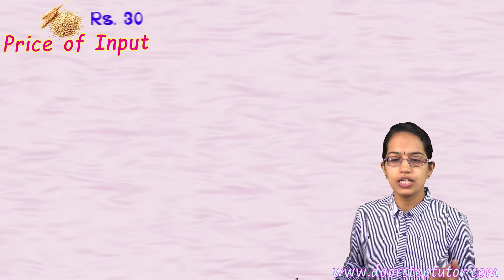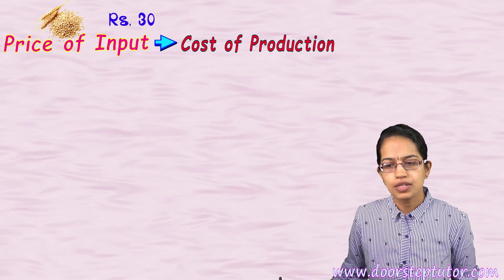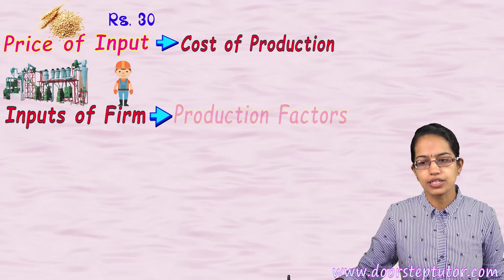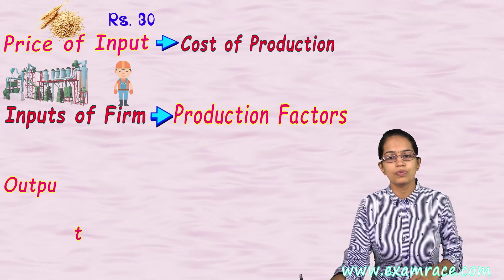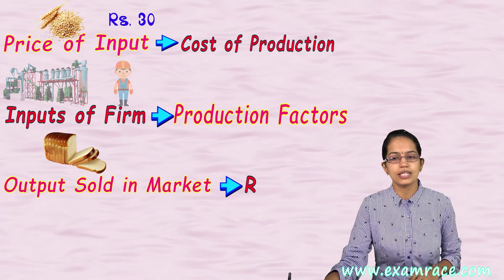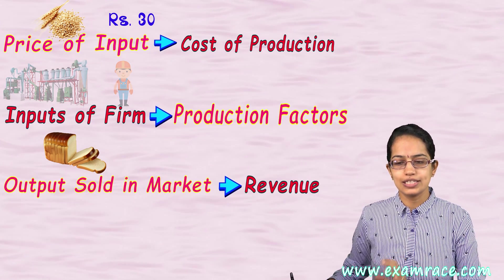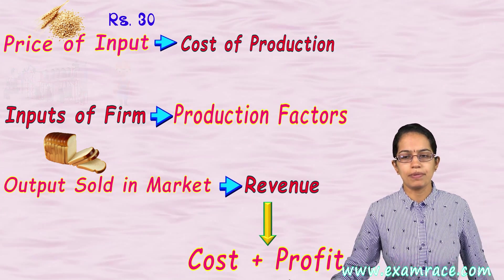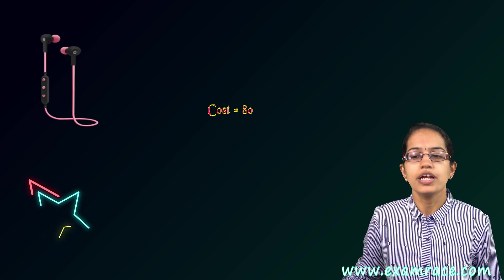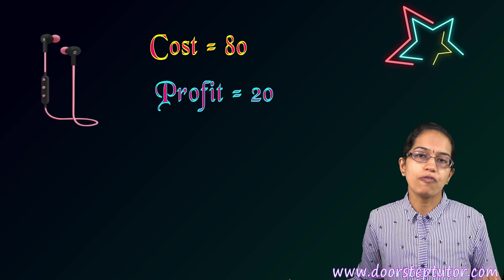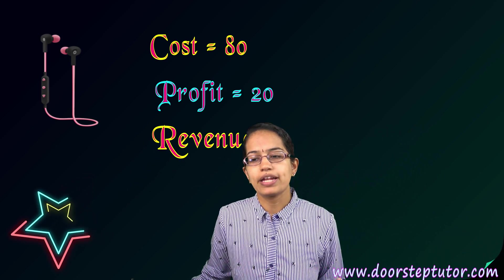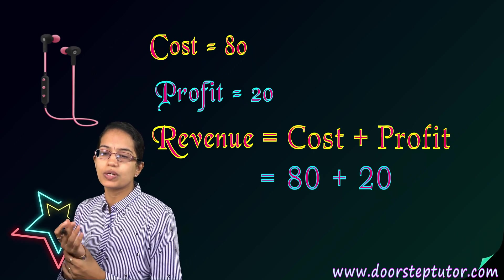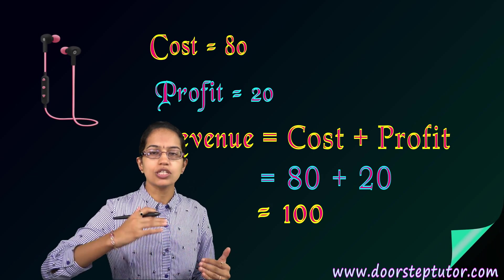What is the price of the input? The price of the input is the cost of production. The input of the firm is your production factor, and the output is sold into the market as revenue. For example, if I produce earphones for 80 bucks and take a profit of 20, my revenue would be 100 — that is my cost plus profit. Revenue is the total cost along with the profit, which is the net turnover.